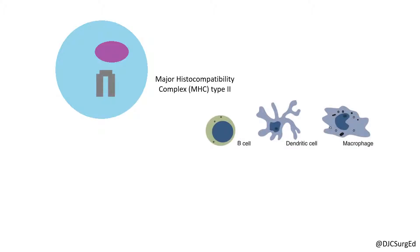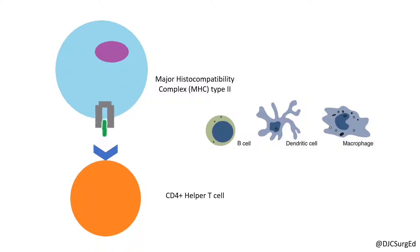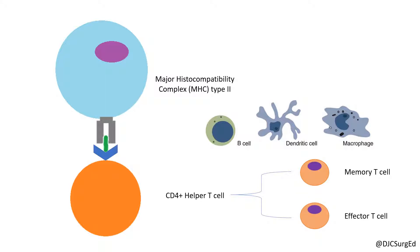MHC class 2 occurs on antigen-presenting cells, including macrophages, B cells, and dendritic cells, and presents antigens to helper T cells that express the CD4 receptor. Binding of the CD4 receptor to the MHC2 complex primes the naive helper T cell to become either a memory T cell or an effector T cell.